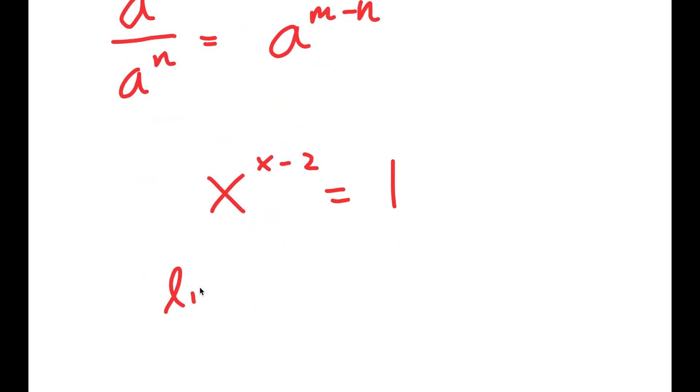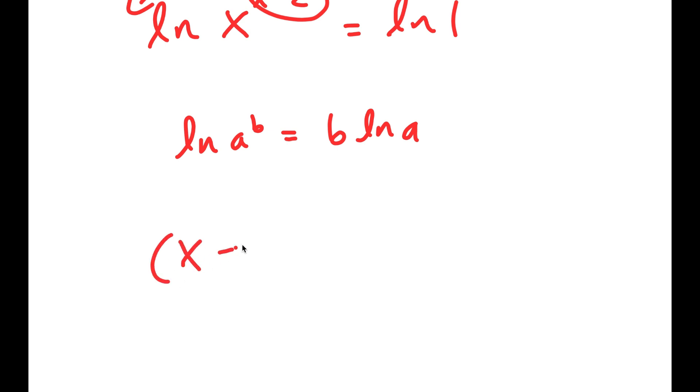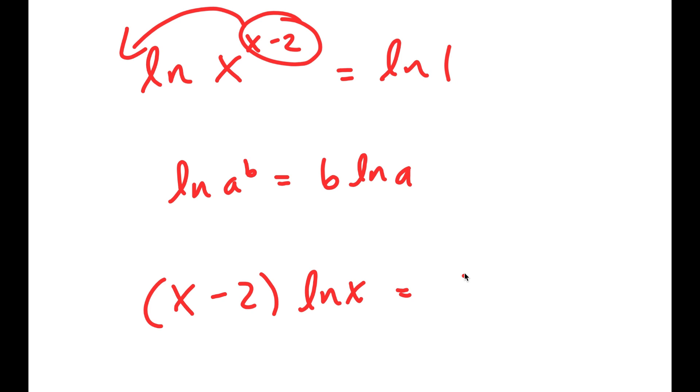Now, from here, I'm going to take the ln on both sides. So I get ln x to the power of x minus 2 is equal to ln of 1. Now, if I have something of the form ln a to the power of b, this is equal to b times ln a. So I can move x minus 2 to the front, and I get x minus 2 times ln x is equal to ln of 1 is 0.